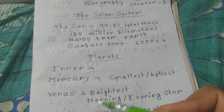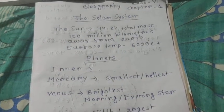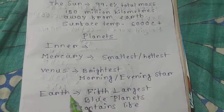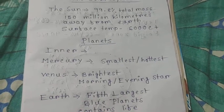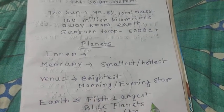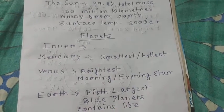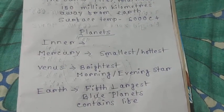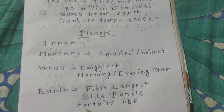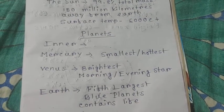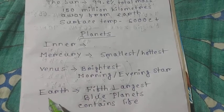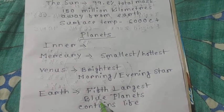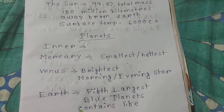Then Earth — one of the most important planets in our solar system. It is the fifth largest planet, also called the blue planet because of the water, or most of the water it contains. Also, the most important reason for the importance of the earth is it contains life. It is the only planet believed to contain life.